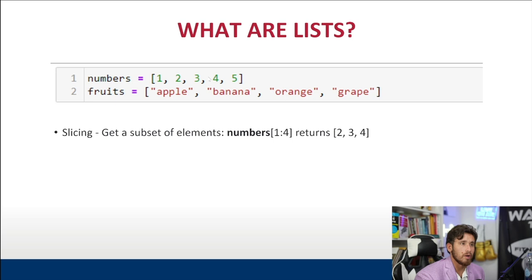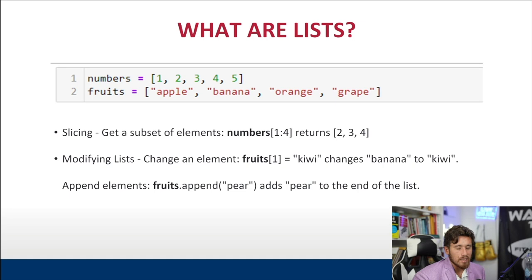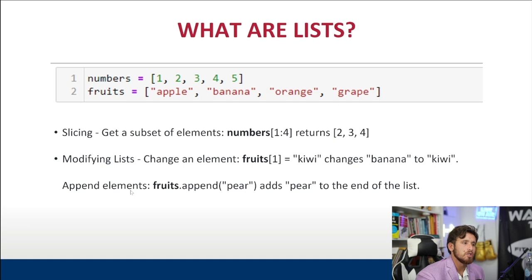We can modify the list by accessing it with its name and a specific index. For example, if we want to change fruits[1] — which is 'banana' — we can change it to 'kiwi'. We can also append elements by adding to the end of the list using fruits.append(), passing what we want to add inside the parentheses. We'll get into the Jupyter Notebook and do some of these practices together.